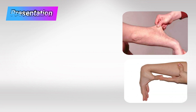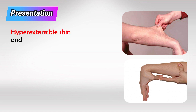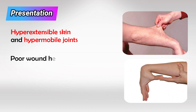Collagen is a structural protein that gives strength and stability to all tissues in the body, mainly the skin. So we see the classical hyper-extendable skin and hypermobile joints in these patients. If there's a skin wound, it will heal very poorly.